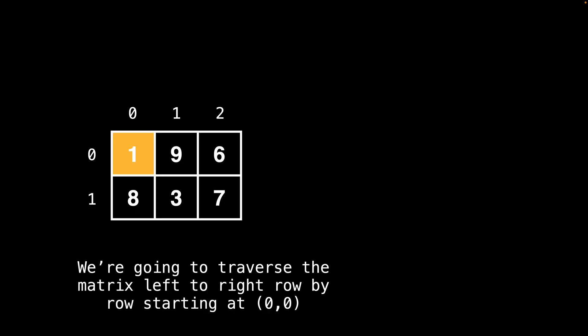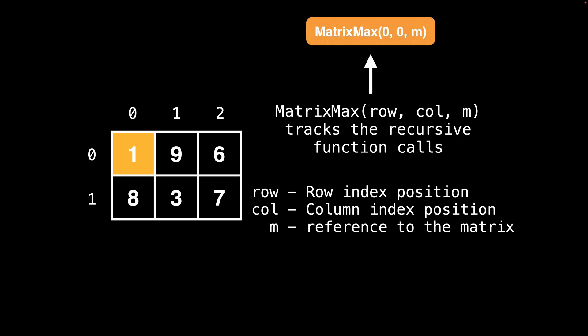I hope you all had a chance to give the challenge a try. Let's look at one way to solve this problem. Here on the screen I have a 2D matrix with six cells. The way we're going to approach solving this problem is by keeping track of the maximum value by traversing the matrix left to right, row by row, starting at index position 0,0. I will be keeping track of the recursive function calls to the matrix max function, which takes three arguments: the row index position, the column position, and M, a reference to the matrix. The first function call to the matrix max function is the row-column position 0,0 to kickstart the recursion.